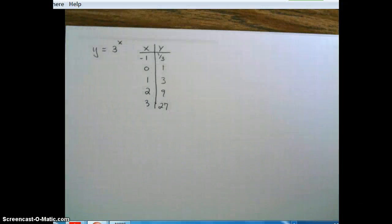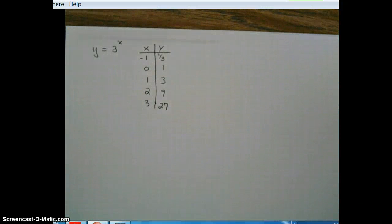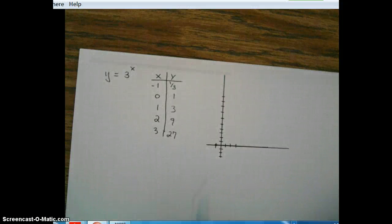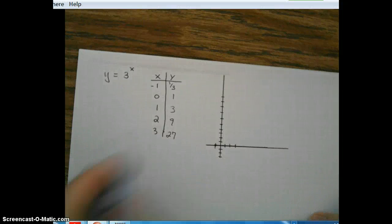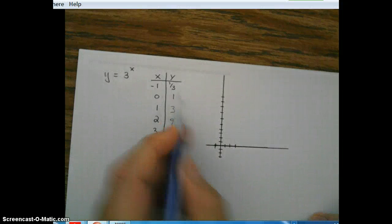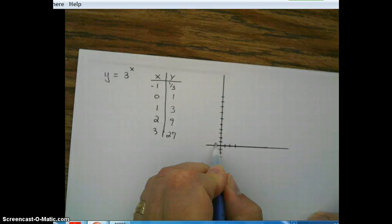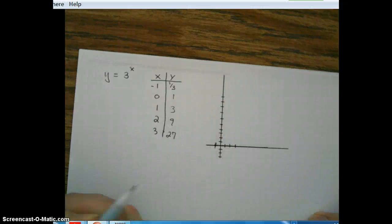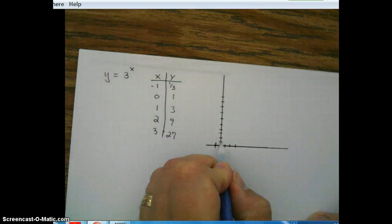Next thing we're going to do is we're going to make a graph. I'm going to pause my video for a moment and set up a graph. Okay, so make yourself an x-y axis, put some tick marks on there. And let's go ahead and plot some points. So we've got negative 1 and 1 third. So negative 1, 1 third, about right here. 0, 1, that's our special point.